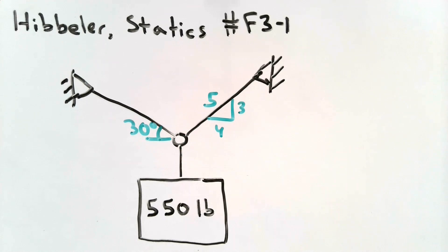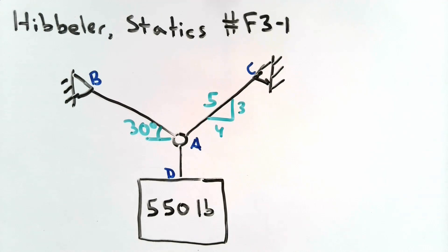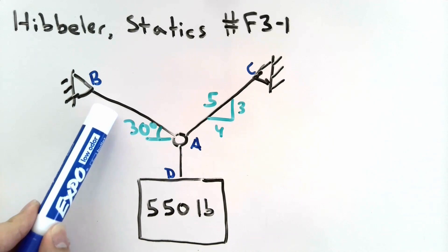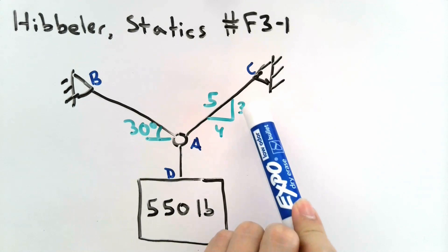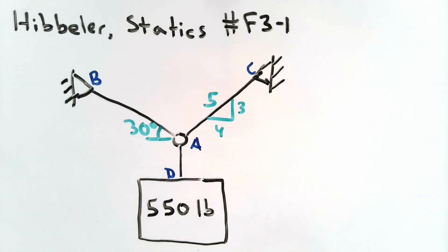For simplicity, let's label our cables. I'm going to label the ring A, and each cable will carry the name from its two endpoints. So this would be cable AB, this would be cable AC, and this would be cable AD.